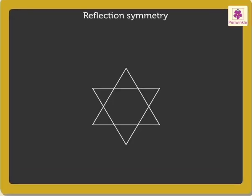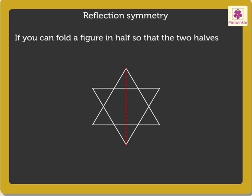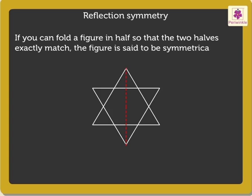Look at the star of David. Now, let's fold this figure in half. You will notice that both the halves match each other exactly. If you can fold a figure in half so that the two halves exactly match, the figure is said to be symmetrical. This kind of symmetry is called reflection symmetry.